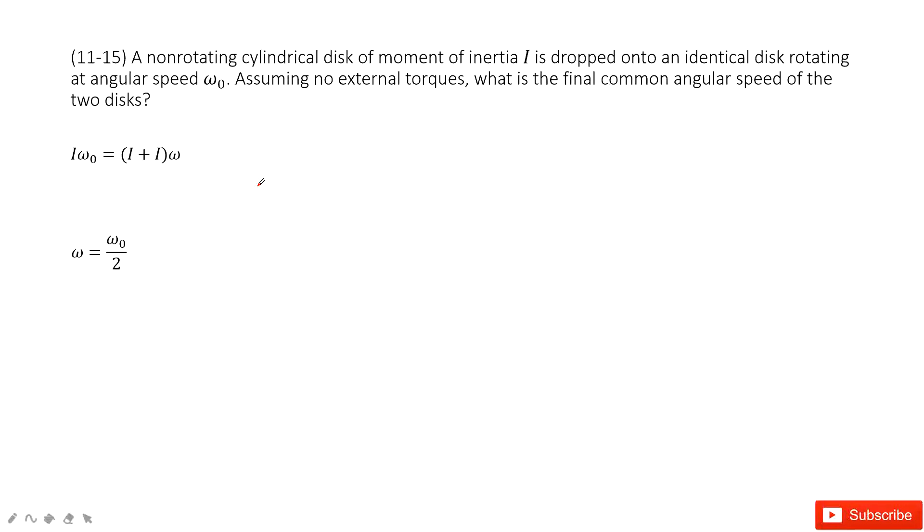In this system, we can see initially we have one non-rotating cylindrical disk. For this object, the moment of inertia is given, and the angular velocity is zero because it's non-rotating.